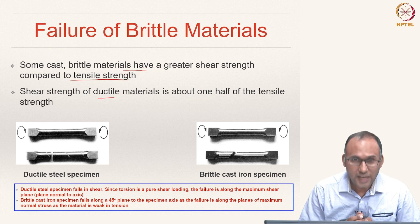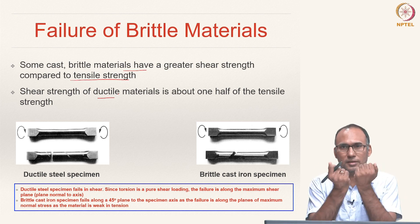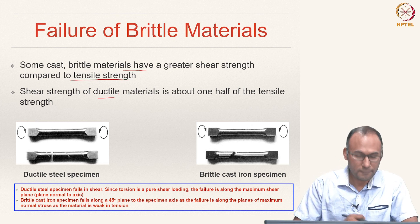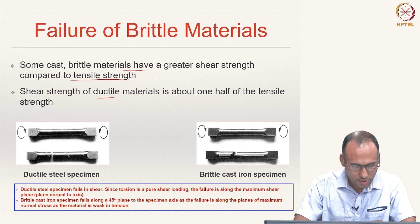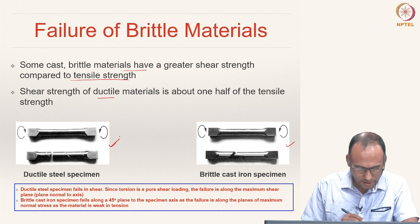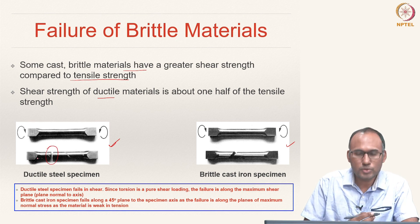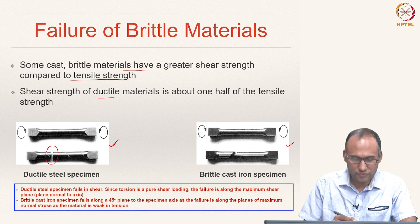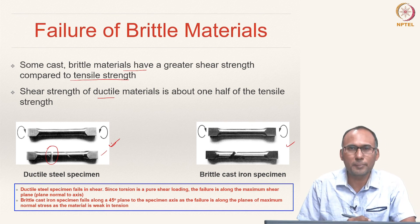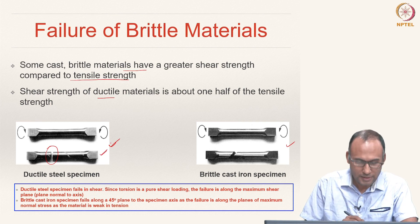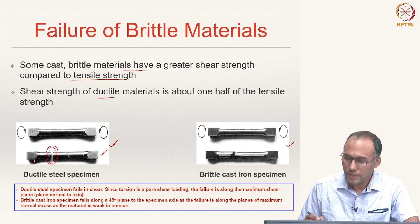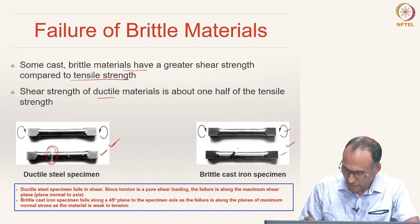In the last class we looked at how a brittle material fails when you apply uniaxial tension — it actually fails across the surface normal to the applied loading direction. If you apply a torsional load on a ductile material, it fails normal to the axis of application of your torque, so the failure surface looks very similar to that of a brittle material failing in tension. Whereas if you apply torsion on a brittle material, it actually fails at an angle of 45 degrees.